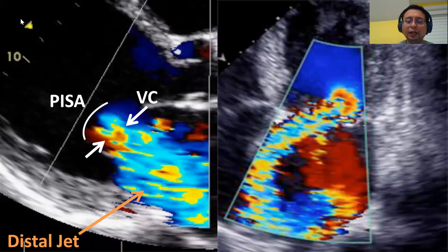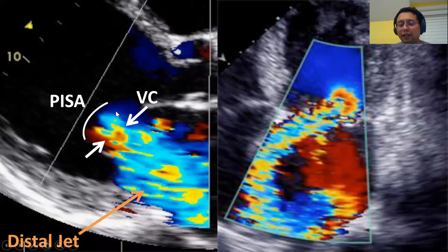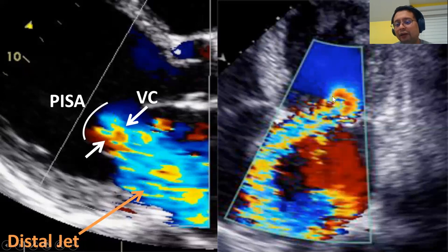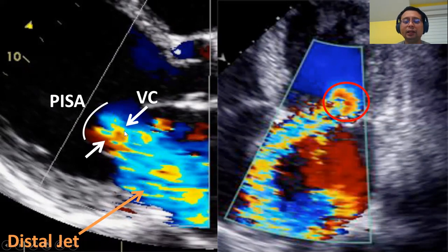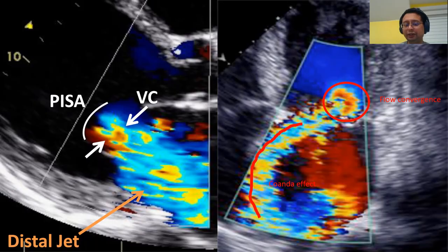Here is an example of MR on echo. The circle at the valve is the zone of flow convergence — the bigger the circle, the more severe the MR. If there is no flow convergence, severe MR is unlikely. Also measure the vena contracta — the narrowest point — more than 7 mm is severe. Coanda effect is seen when the jet appears narrow but swirls around the left atrial wall — this is also severe MR. You can also assess whether MR is holosystolic: MR visible from early to end of systole is a marker of severity. Late systolic MR is typical of mitral valve prolapse — at early systole there is no MR, appearing only in late systole.